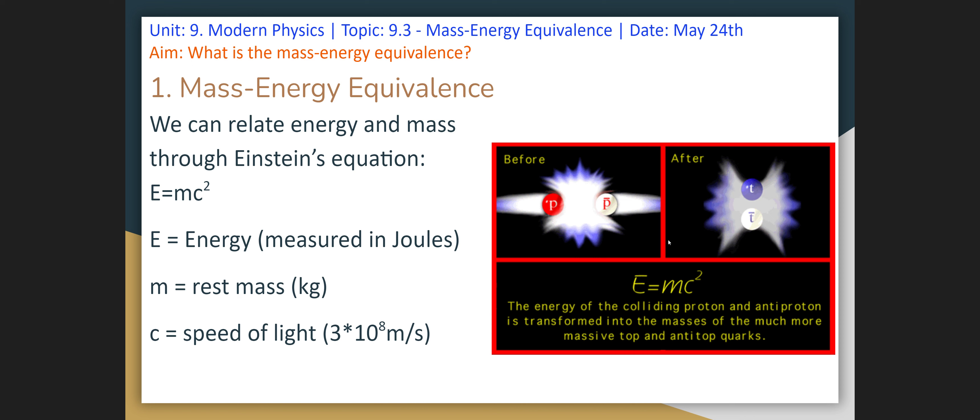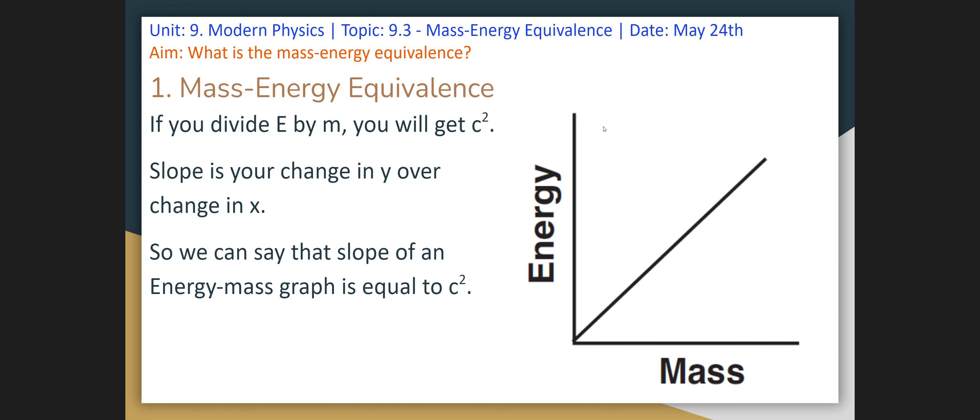All right, so here c is just the speed of light. You have this equation right here. You don't really need to understand too much about it.